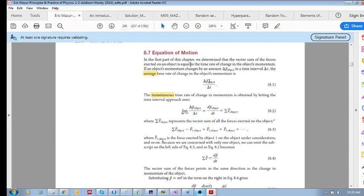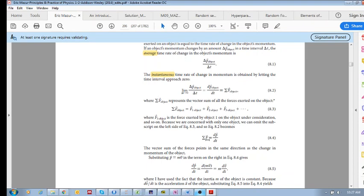However, the instantaneous time rate of change in momentum is when you let this delta t tend to zero. You make this smaller and smaller so that you get the instantaneous time rate of change in momentum, and this is equal to the sum of all the forces acting on a single object. So the sum of the forces is equal to dp/dt.